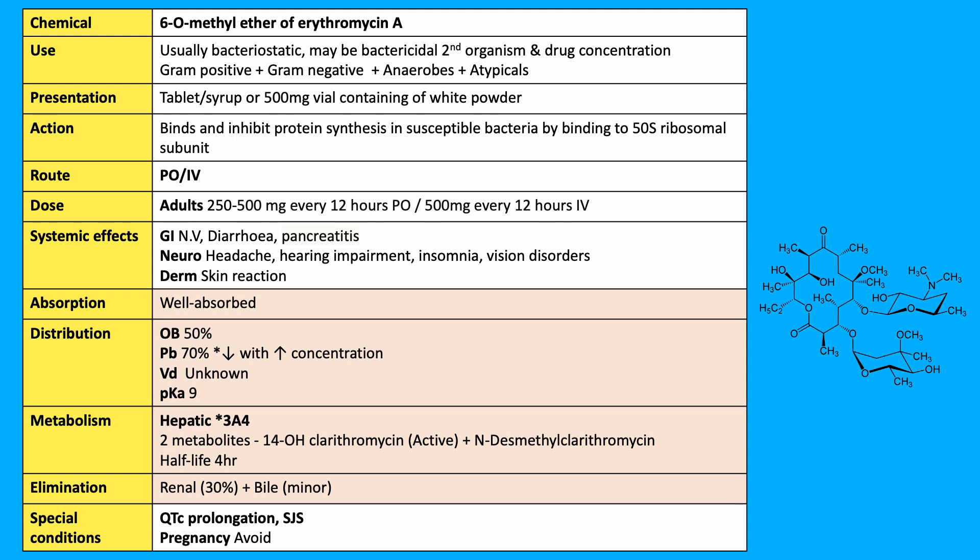It's well-absorbed orally and has an oral bioavailability of 50%, protein binding of 70%, the volume of distribution is unknown, and a pKa of 9. It's mainly metabolised by cytochrome P450 3A4, resulting in numerous drug interactions. It's first metabolised to 14-hydroxyclarithromycin, which is active and works synergistically with the parent compound.